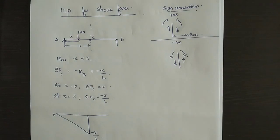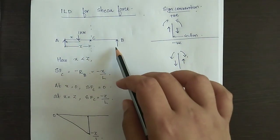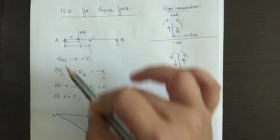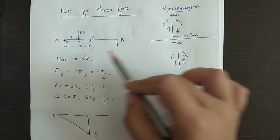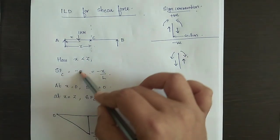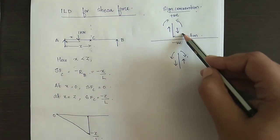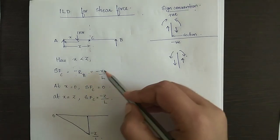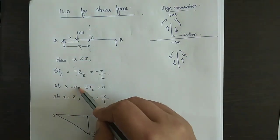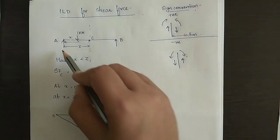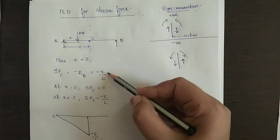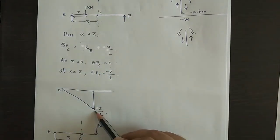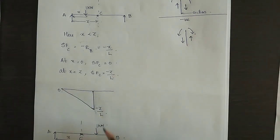Returning to the simply supported beam AB of span L, with section at distance Z from A and unit load at distance X from A. When X is less than Z, the unit load is to the left of the section. Shear force at the section is written as minus RB, since upward forces to the right of the section are taken as negative. RB is X by L, so at X equal to 0 shear force is 0, and at X equal to Z shear force is minus Z by L — plotted in the bottom portion.